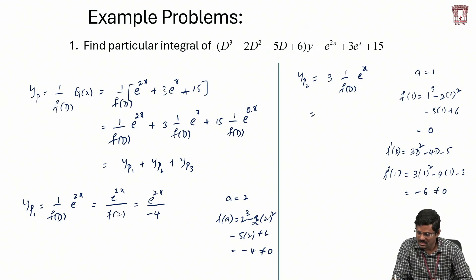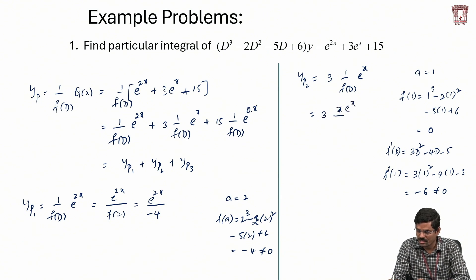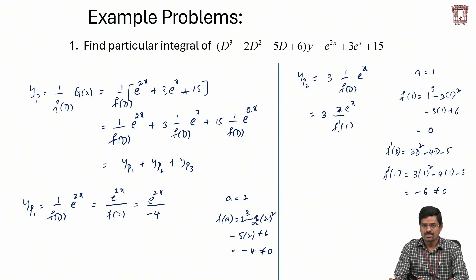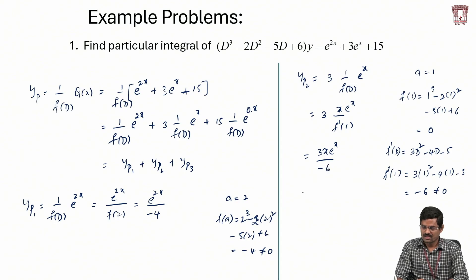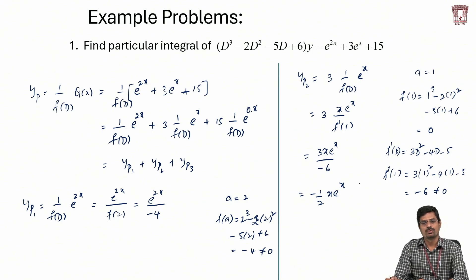Calculating f'(1) = 3·1² - 4·1 - 5 = 3 - 4 - 5 = -6, which is non-zero. Applying Case 2: yp2 = 3·x·e^x / f'(1) = 3x·e^x / (-6) = -x·e^x / 2.